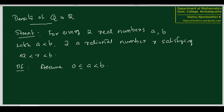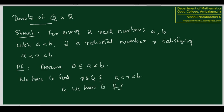Now we have to find a rational number R such that R lies between A and B. How does a rational number look like? It looks like an element of the form M by N where M and N are both integers. Since we are assuming that A and B are both positive, we can safely assume that we want an M by N such that M and N are both positive integers. So we have to find R belonging to Q such that A less than R less than B, that is A less than M by N less than B. This is what we have to finally show.